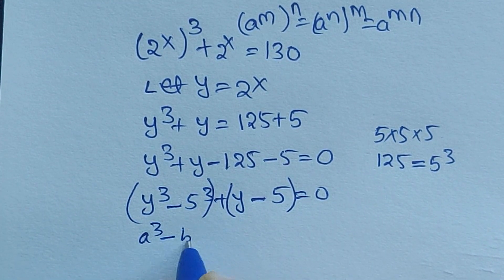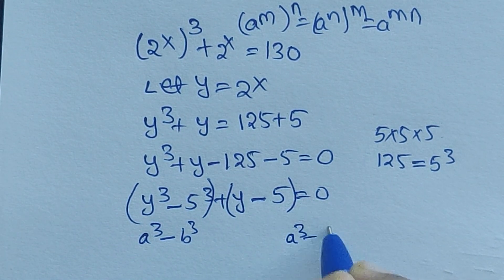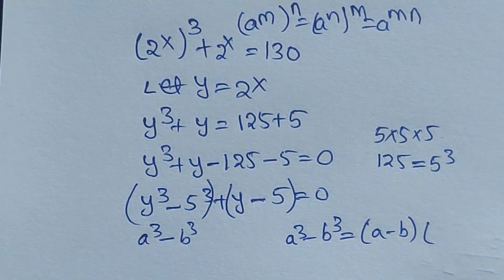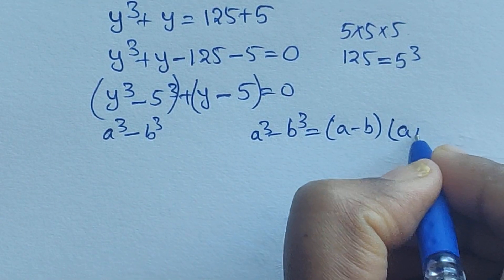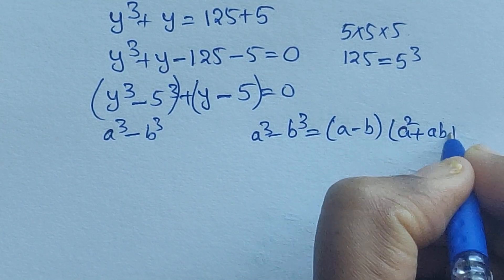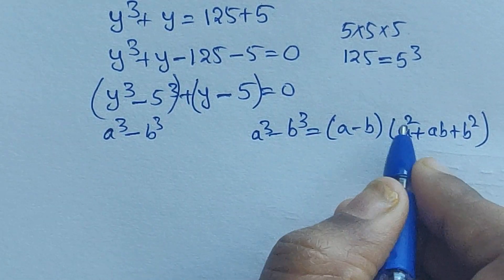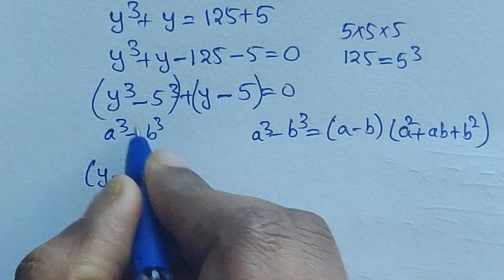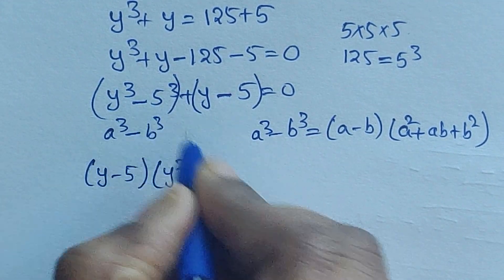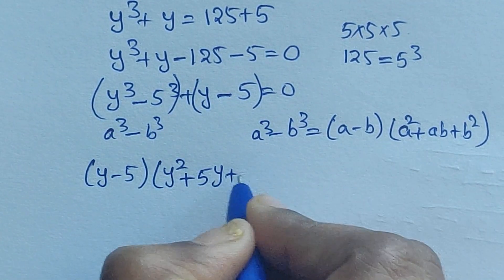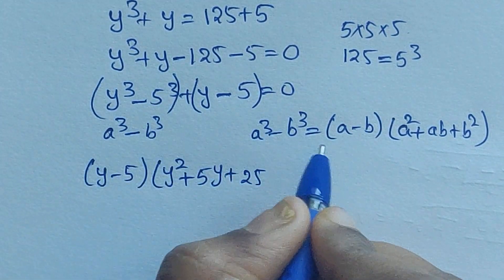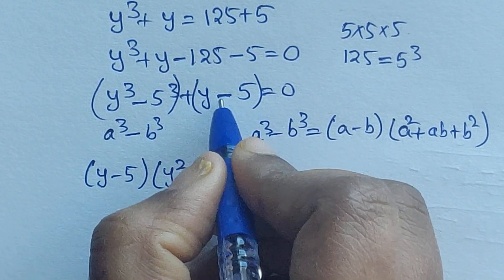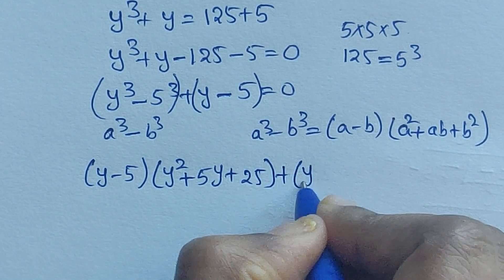So we have y cubed minus 5 cubed plus y minus 5 equals 0. This is in the form of a cubed minus b cubed. We know the formula: a cubed minus b cubed equals a minus b times a squared plus ab plus b squared. Applying this formula, we write y minus 5 times y squared plus 5y plus 25.